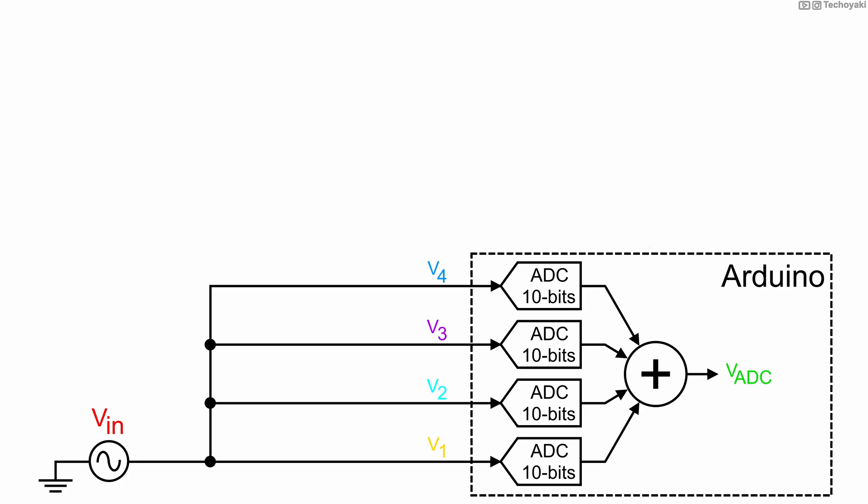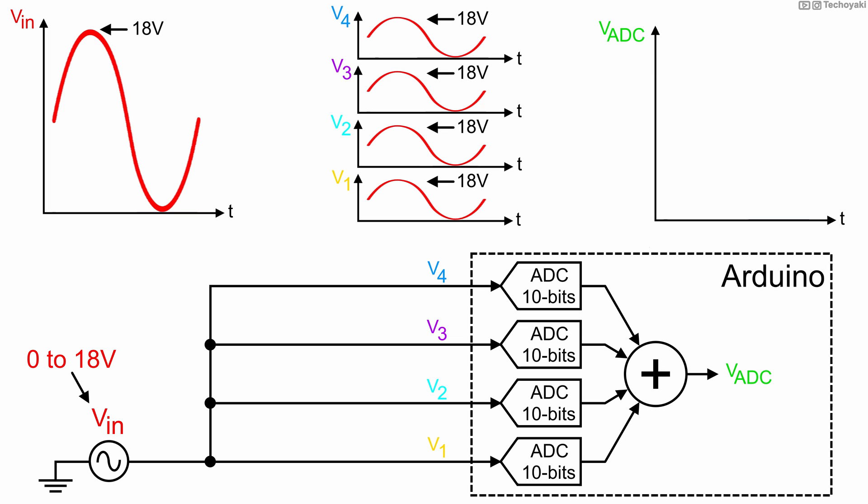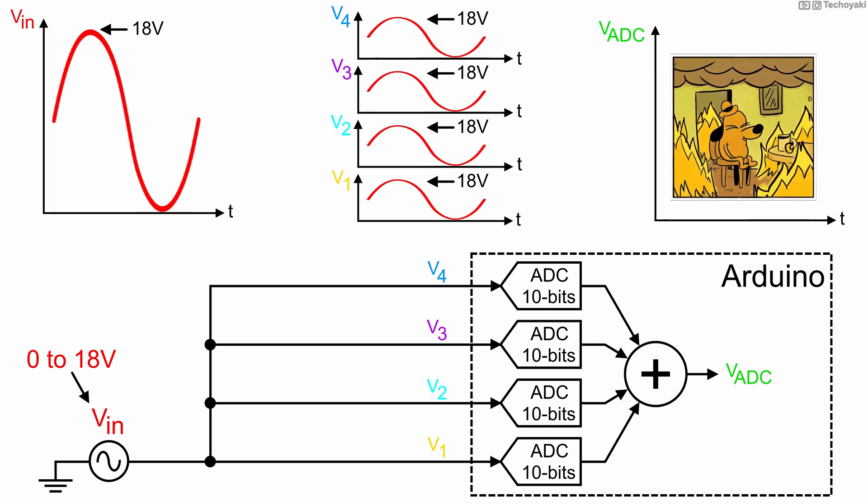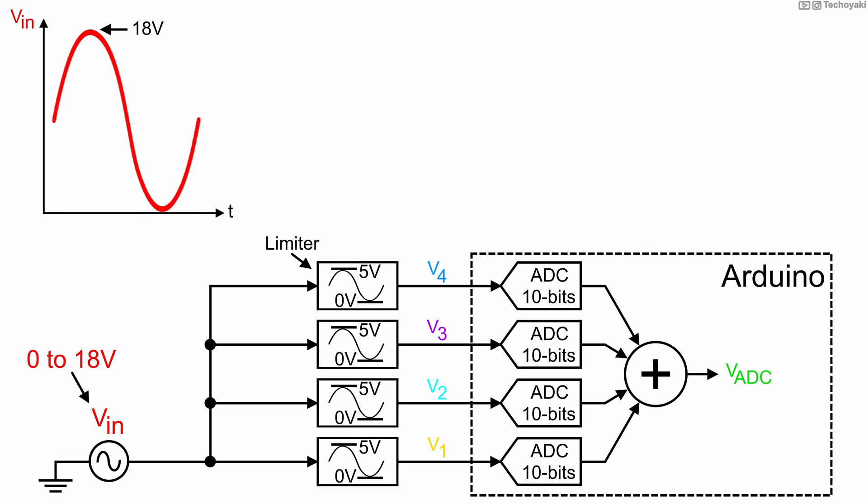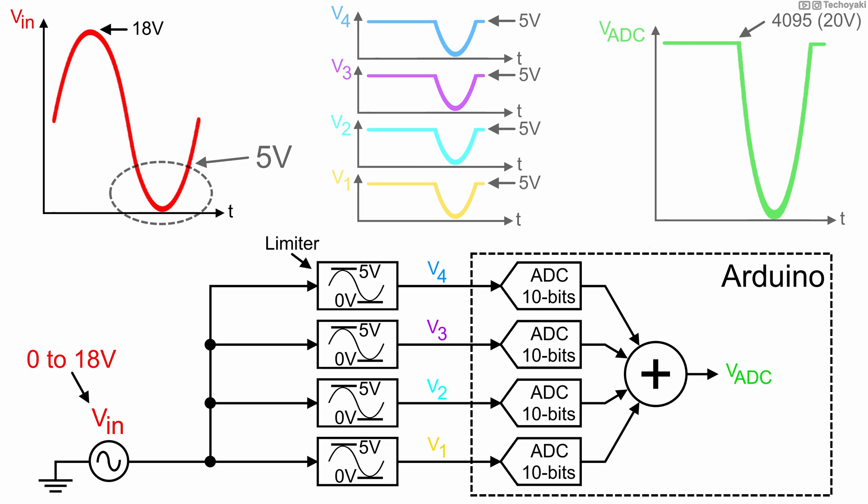The concept behind the Quantizer is very simple and is based on two main requirements. To illustrate these requirements, here is our setup where we have an input voltage signal going into the Arduino ADCs. First, it needs to limit the voltage going into the Arduino, which can only accept signals from 0 to 5 volts. If we give it the entire 18 volt signal, then well, it's goodbye Arduino. So we place a limiter which limits the incoming signal from 0 to 5 volts, just before the Arduino ADCs.